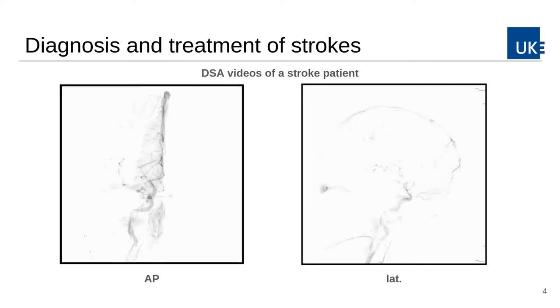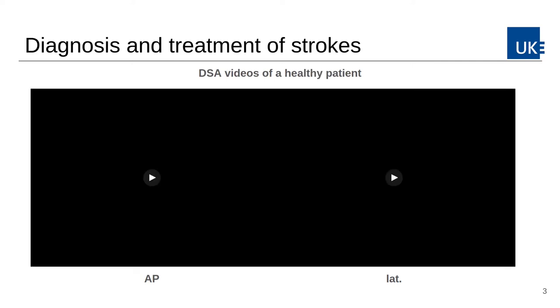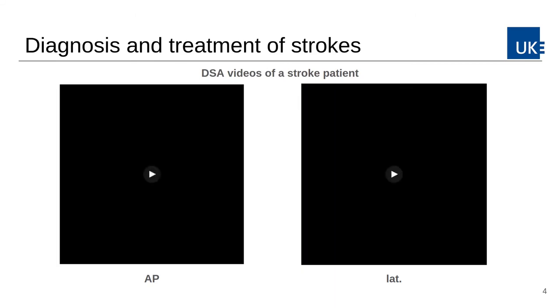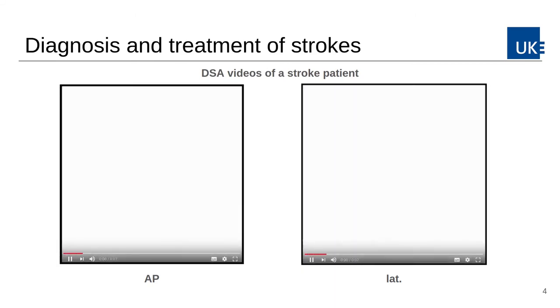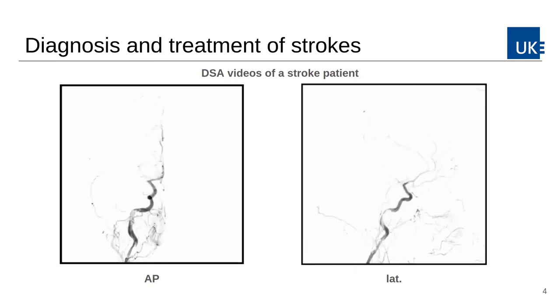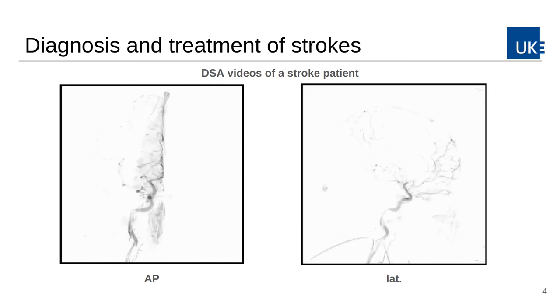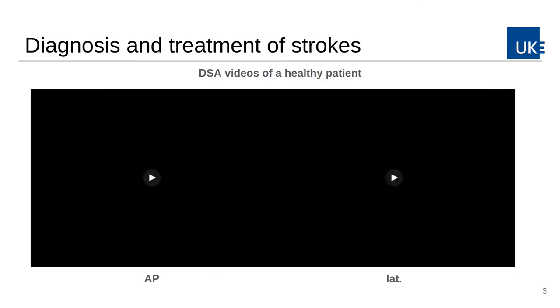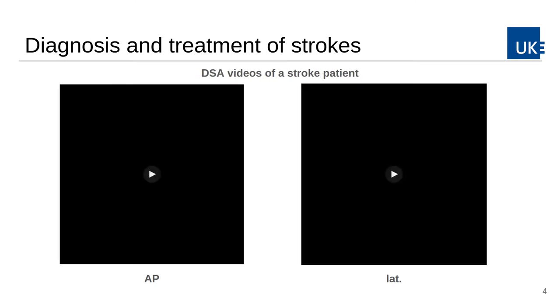In the process, the thrombus might be partially disassembled and therefore move further distal, leading to a better but not perfect perfusion. In this work, we focus only on M1 strokes which are treated with mechanical re-canalization.